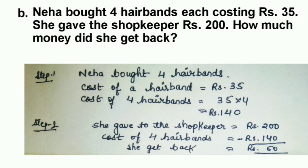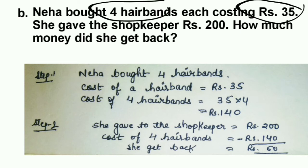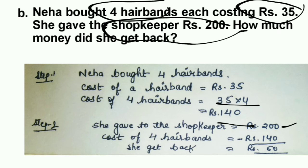Next: Neha bought 4 hair bands each costing Rs. 35. She gave the shopkeeper Rs. 200. How much money did she get back? Step 1: cost of 4 hair bands = 35 times 4 = Rs. 140. Step 2: she gave Rs. 200, so she gets back 200 minus 140 = Rs. 60.